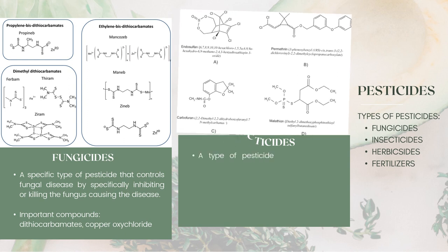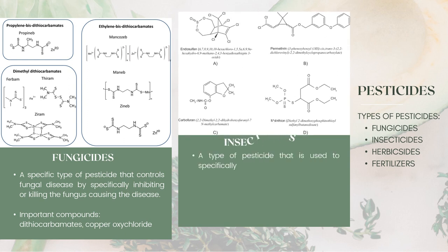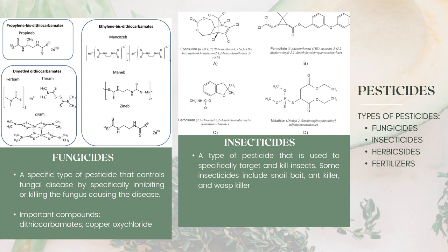Insecticides are a type of pesticide used to specifically target and kill insects. Some insecticides include snail bait, ant killer, and wasp killer. The important classes are chlorinated hydrocarbons and organophosphates. For example, these compounds can be found in endosulfan, carbofuran, permethrin, and malathion.